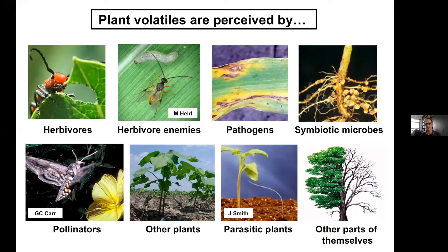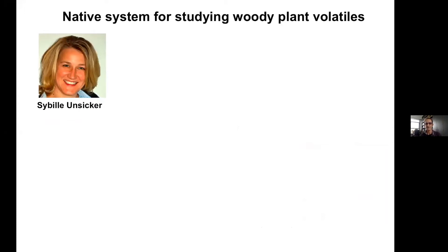She wanted to study natural systems, realizing that most work had been done on cultivated plants. She wanted to know whether volatiles might act in the wild in the same way we studied them in agricultural systems. This person is Sibylla Unsecker, a wonderful ecologist who set out to find a native system where she could study woody plant volatiles to understand their role in natural systems.